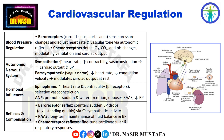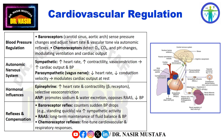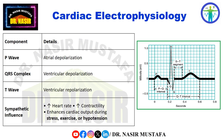Hormonal influences: epinephrine enhances heart rate and contractility via beta receptors and induces vasoconstriction in select vascular beds. ANP promotes sodium and water excretion, opposing the RAS and reducing blood pressure. When standing quickly, the baroreceptor reflex counteracts the initial drop in blood pressure by increasing sympathetic activity. Long-term renal angiotensin-aldosterone system activation maintains fluid balance and blood pressure over hours to days, while chemoreceptor reflexes fine-tune cardiovascular and respiratory responses.